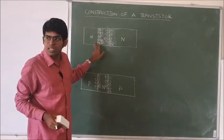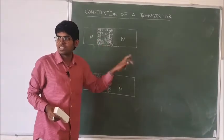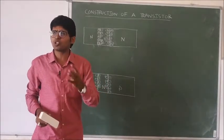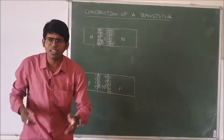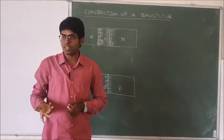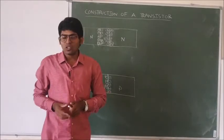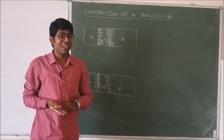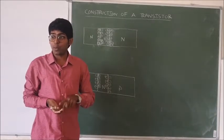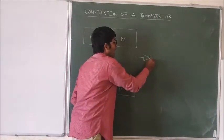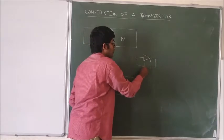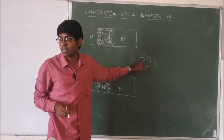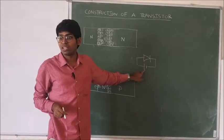This barrier potential is the major factor in deciding the transistor action. Now this transistor can be biased in four possible ways. What is biasing? Giving an external voltage. A diode can be biased in two possible ways: one is forward bias and the second one is reverse bias. When the anode is connected to the positive terminal and the cathode is connected to the negative terminal, this is called forward bias.